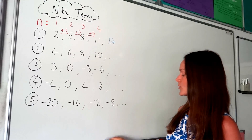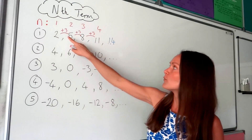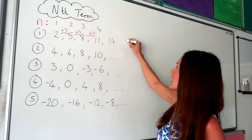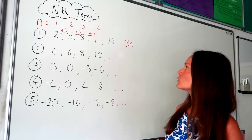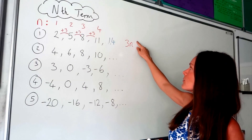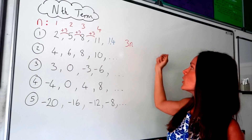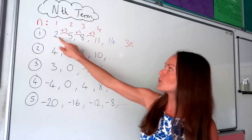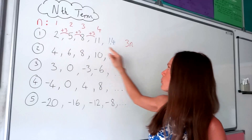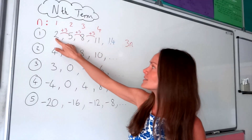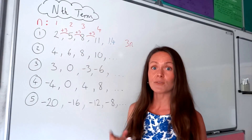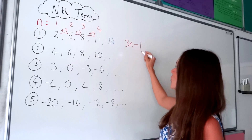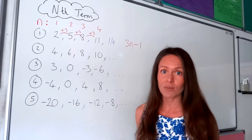To find the nth term, we need to use this difference number. So because it's positive 3, I write down 3n. Now, to find the remainder of this formula, we need to figure out how to get from 3 to the first number in our sequence. To get from the number 3 down to the number 2, we have to subtract 1. So the nth term is 3n minus 1.